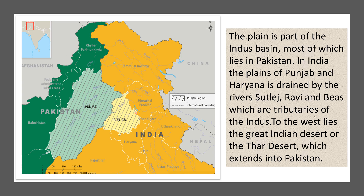The plain of Haryana and Punjab is found in this part of India. This entire plain has been a part of the Indus Basin; however, most of it now lies in Pakistan. Punjab, as the name suggests, comprises five rivers starting from the Indus.